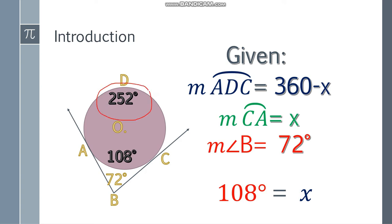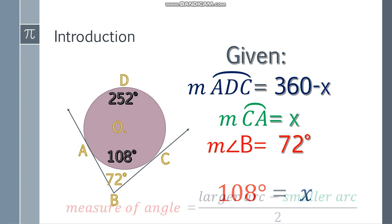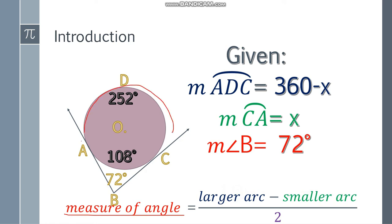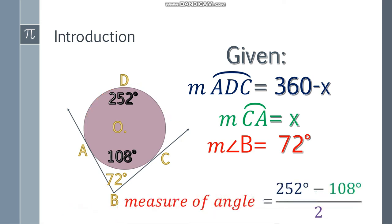But how will we know that we are correct? Let's place the formula again. The measure of the exterior angle will be the larger arc minus the smaller arc, and the answer to that one, well, you have to divide it by 2. So let's substitute the values.